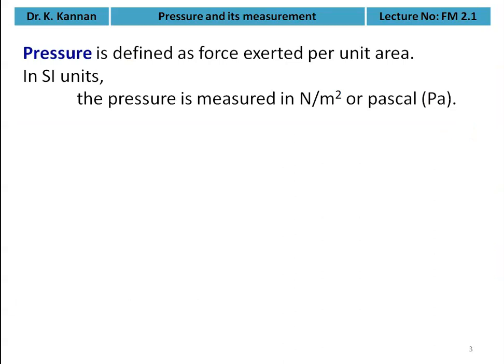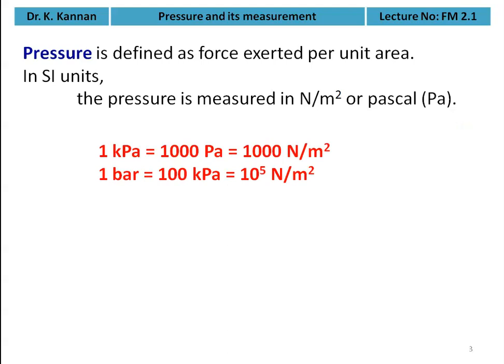Pressure is defined as the force exerted per unit area — pressure equals force divided by area, as studied even at school level. In the SI system, pressure is measured in Newtons per meter square, or Pascal (Pa). One kilopascal equals 1000 Pascal. Another important unit is bar: 1 bar equals 100 kilopascal or 10⁵ Newtons per meter square.